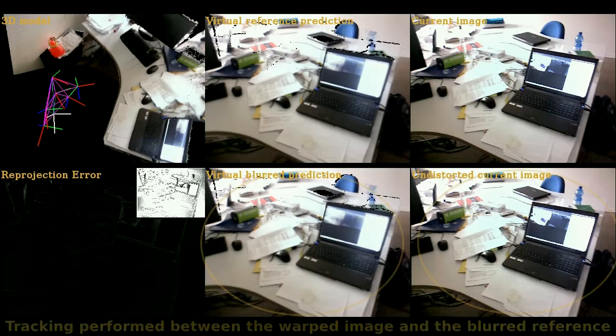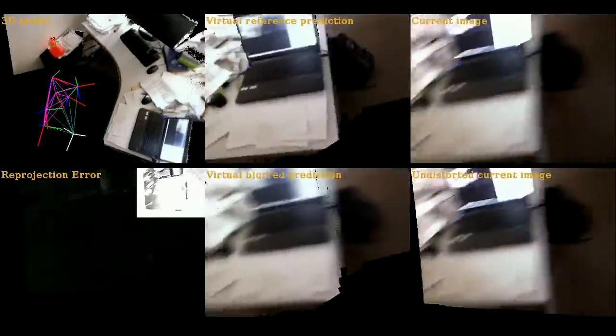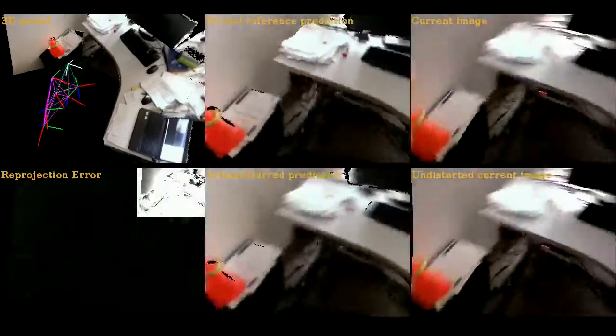Tracking is performed by minimizing the difference between the undistorted current image and the blurred predicted image. The estimated velocities allow to correct for rolling shutter deformations. And here they are used to generate blur in the reference image. Here, fast movements in all 6 degrees of freedom can be seen, and tracking with respect to several reference images is displayed via the graph shown in the 3D model view.